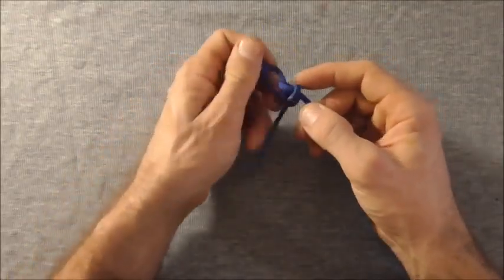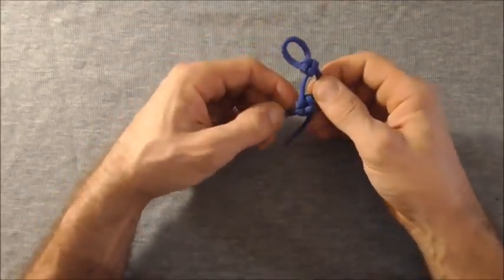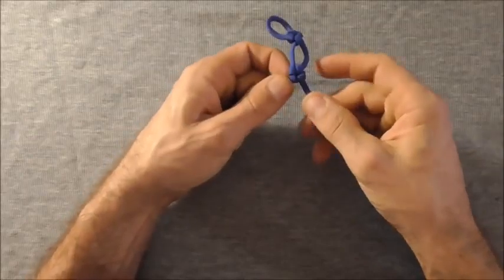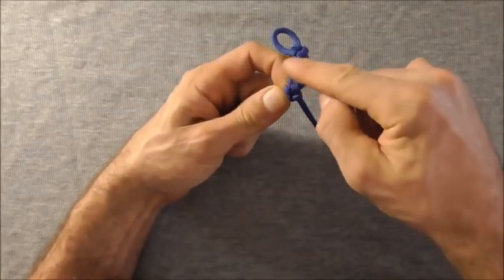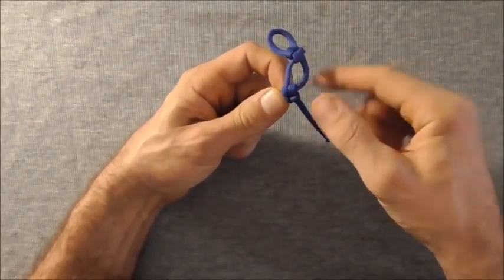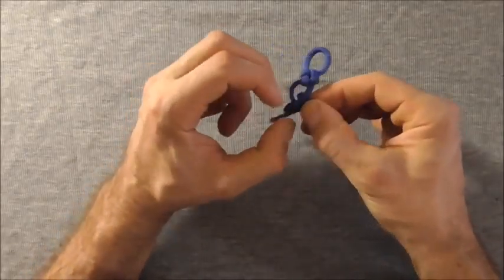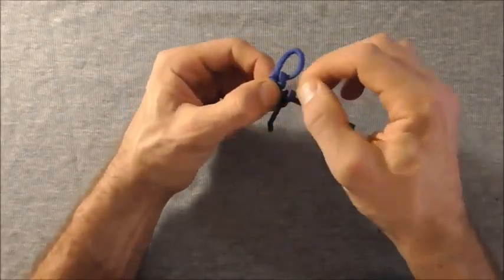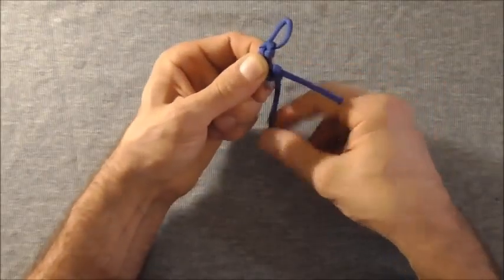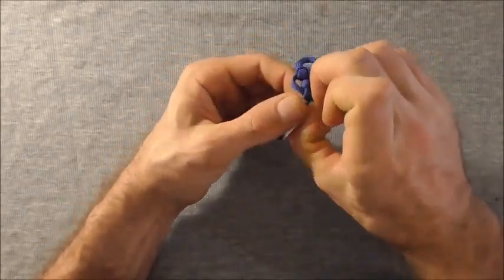And then tighten this knot up. And again adjust these legs here and then pull the slack out of the knot. So just adjust one of these legs, pull the slack through and the other side as well.